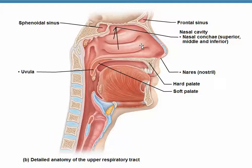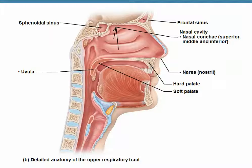I also want to point out that we have two sinuses visible from this figure. We have the frontal sinus, which is found in the frontal bone, and the sphenoid sinus, which is found in the sphenoid bone.